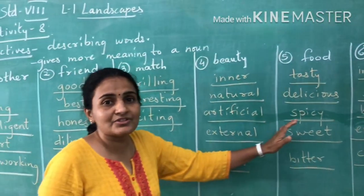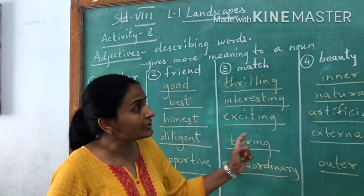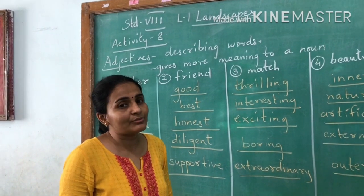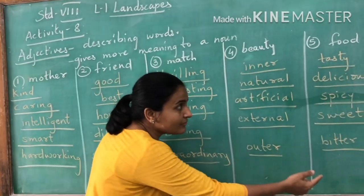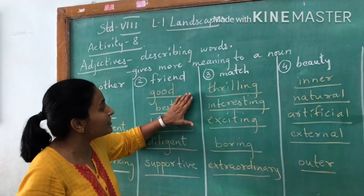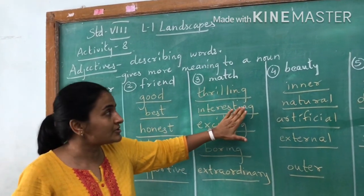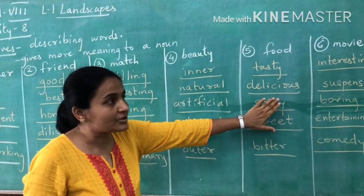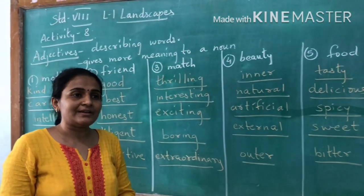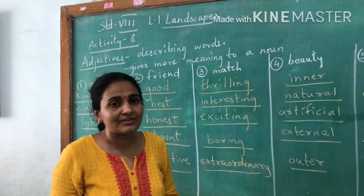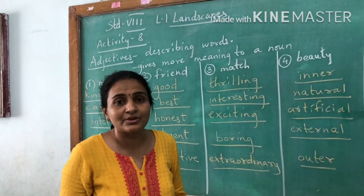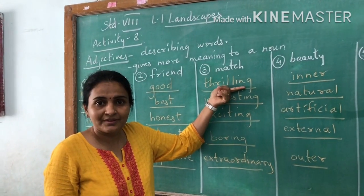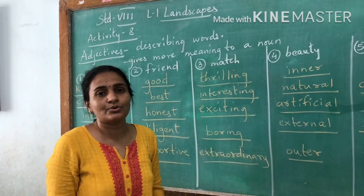Your work is to find 5 more words for each of these: friend, match, beauty, food, and movie, and write them in your notebook. The best thing is to take the help of a dictionary. For example, find out the meaning of 'thrilling' in your dictionary and you will get more words — that is how you can find out more adjectives.